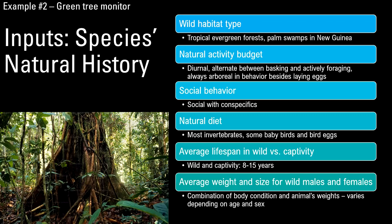Compared to Komodos, green tree monitors are going to be almost entirely arboreal, relatively small, relatively social if given enough space, and mostly invertebrate eaters. They're at a different spot in the food chain compared to Komodos. Komodos don't have a lot of fear of other beings — they're apex predators where they're from and can be dangerous to people.